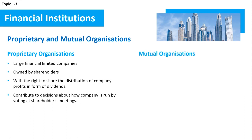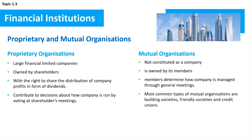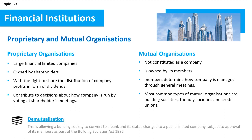Mutual organisations are not constituted as companies and do not answer to shareholders; they are in effect owned by their members — those who deposit, borrow, or are policyholders — who can determine how the company is managed through general meetings. The most common types are building societies, friendly societies, and credit unions. Demutualization allows a building society to convert to a bank, changing its status to a public limited company, subject to approval of its members under the Building Societies Act 1986.